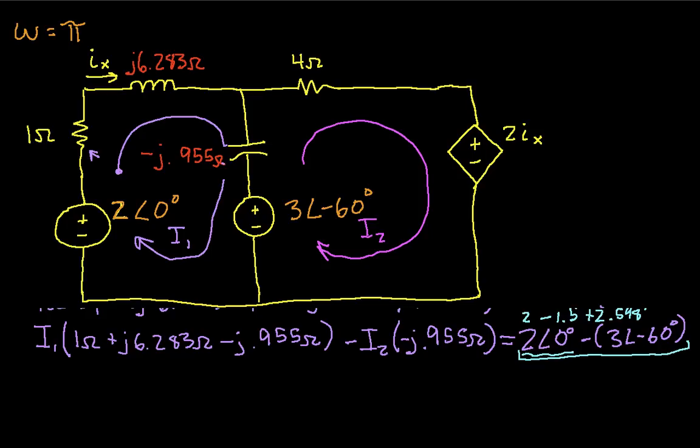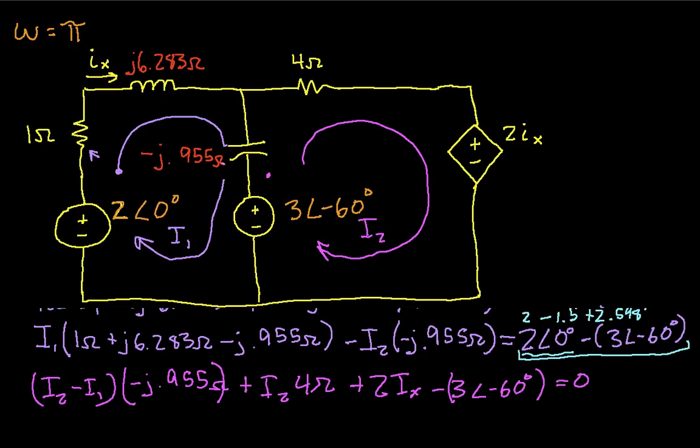So with loop 2, I guess we'll start here at the capacitor. We have i2 minus i1 times minus j 0.955 plus i2 times 4 ohms plus 2 times i1 times ix. And we have then again minus 3 at an angle of minus 60 degrees. And this is equal to 0. So in order to put this into a form that we can use nicely, one thing we need to know is what Ix is. You'll notice Ix is this current right here. And that turns out to be the same as I1. So that's I1.